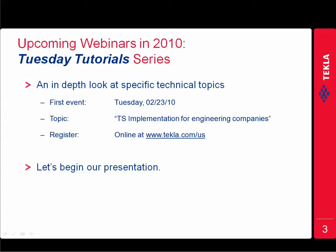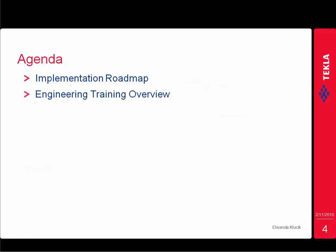The intent of these Tuesday Tutorials is to provide existing customers as well as new and potential customers a more in-depth look at particular items for which we have received a number of questions. The first question most people have when implementing new software is, where do I start? And the second question is, what do I need to learn to be more productive? Rob and I will try to address these questions today. At this point, I will let Rob discuss our recommended Roadmap.